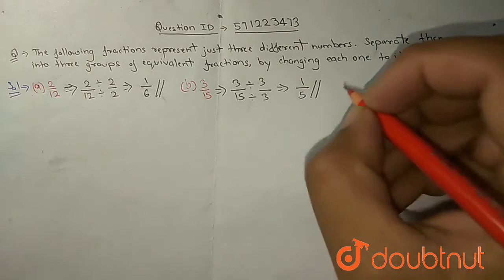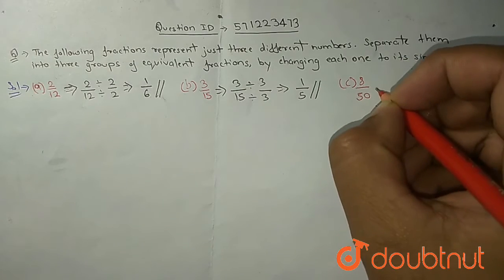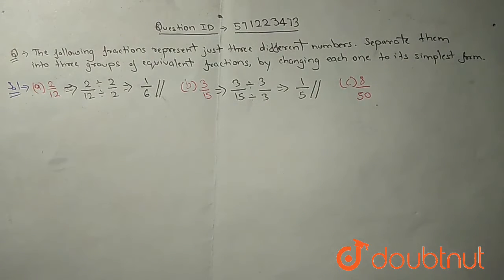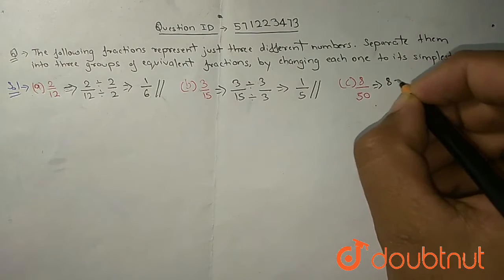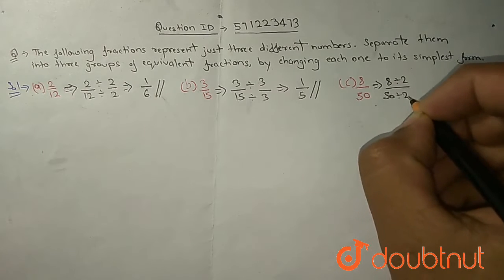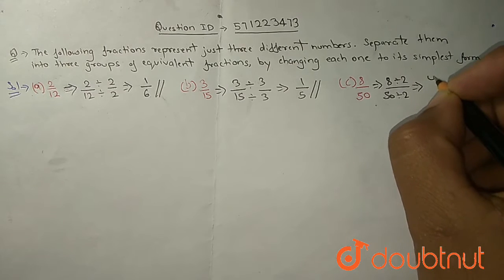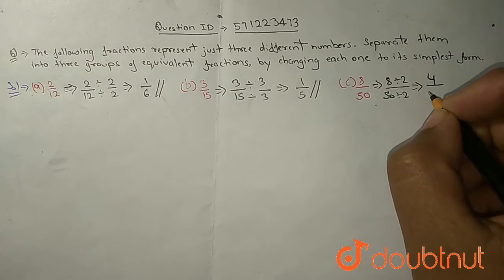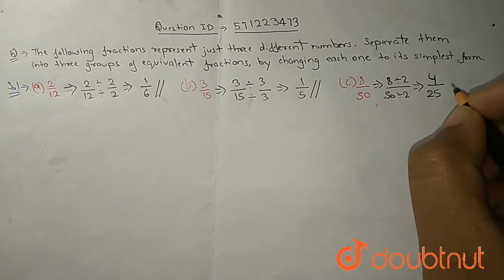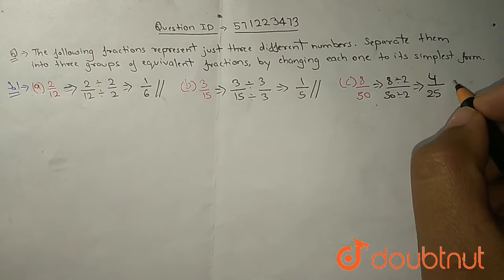Now let's move on to C point. The fraction is 8 upon 50. What will be the smallest factor? 8 also come in 2 and 50 also come in 2. So we will start with 2. 8 divided by 2 on numerator and 50 divided by 2 on denominator. 2 times 4 we get 8, so we'll write 4 here on the numerator side and the half of 50 is 25. Can it be more divisible? No. Because in any table there is no 4 and 25 together.